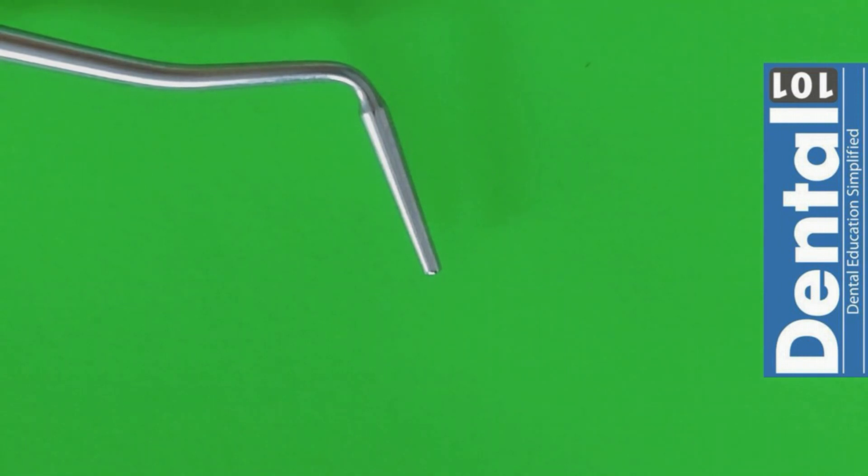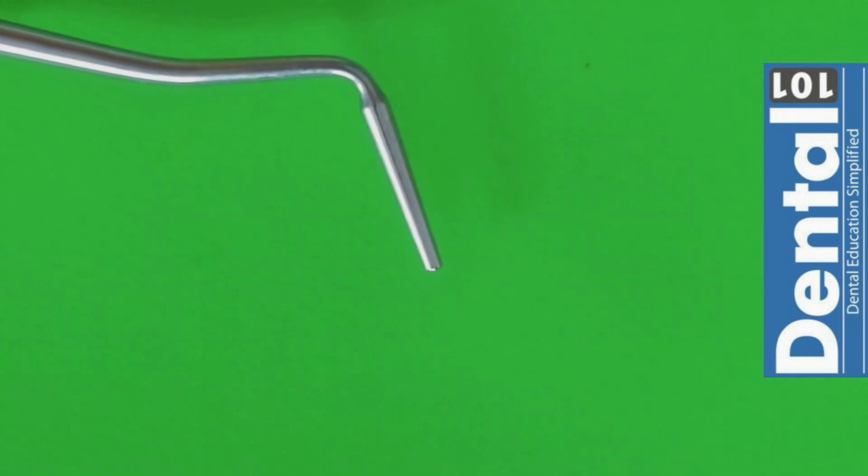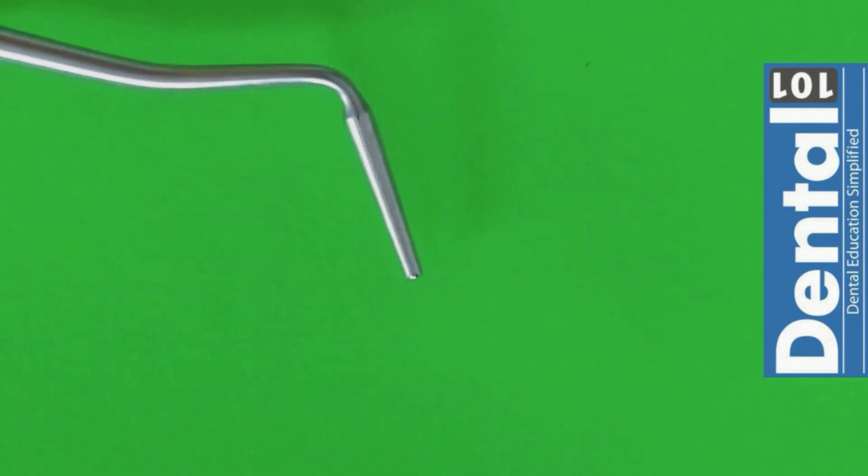Okay guys, so now taking a closer look to each instrument. Here we have the Martenson plugger. This is a double-ended instrument and it's basically used to condense any amalgam or any other restorative materials such as composite.